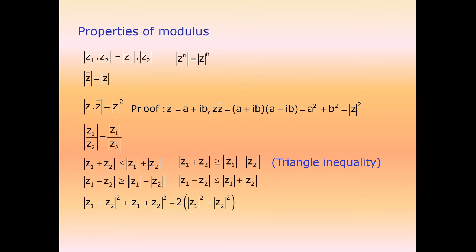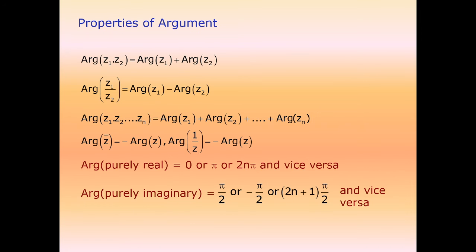While inequality/order is not defined for complex numbers, the modulus |z| is a real number associated with every complex number. Important properties include triangle inequalities and properties of argument: arg(z₁·z₂) = arg(z₁) + arg(z₂).